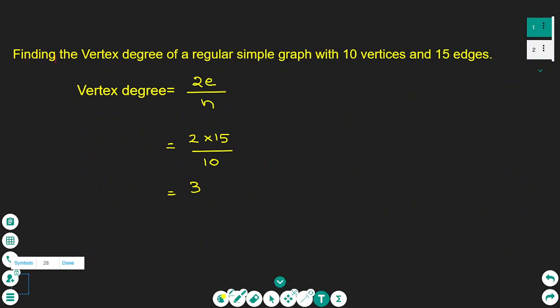To find the vertex degree of a regular simple graph we follow the formula 2E over N, where E is the number of edges and N is the number of vertices. So we do 2 times 15 divided by 10 for 10 vertices and 15 edges, giving a degree of 3.